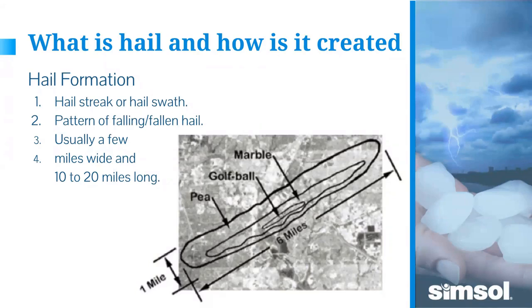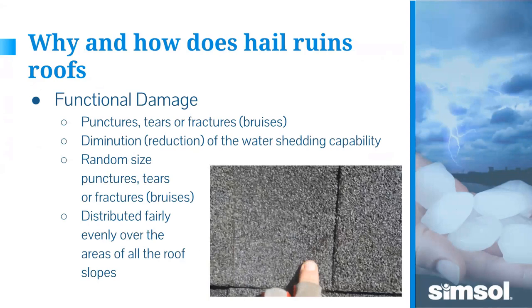With a hailstorm, they usually refer to the pattern as a streak or swath — typically a few miles to 10 or 20 miles wide. Where your building sits within the swath determines what hail size you'll see. Larger hail is at the core of the formation, and smaller hail drops off in size toward the edges. For example, you might have golf ball-sized hail in the middle, surrounded by marble-sized, then pea-sized hail.